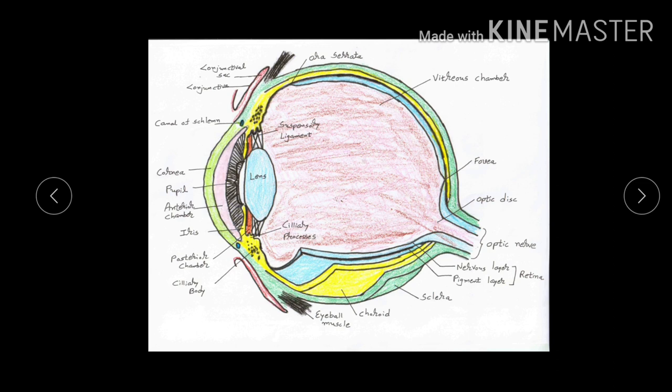Now we are moving towards the tunica vasculosa, which is the middle layer of the eyeball shown here in yellow. It is mainly composed of three components: the choroid, the ciliary body — which is an anterior extension of the choroid — and the iris, a disc-like extension forming the third component.